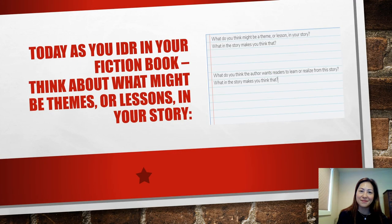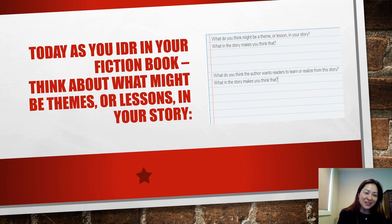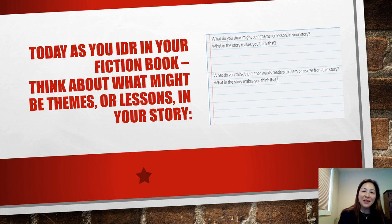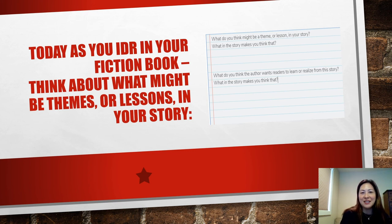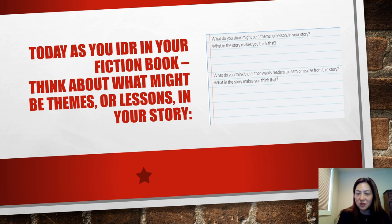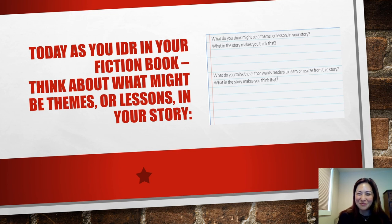Hopefully you have a fiction independent reading book, as we are looking at themes in them right now. Sometimes the theme of a story doesn't really become clear until the end, but you might be able to guess what the author is trying to say from what you've read so far. Today as you do independent reading, you might want to think about what could be some themes or lessons in your story, what you think the author wants readers to learn or realize, and what makes you think that. Hopefully you enjoyed the two fables and I will see you soon to share some more.